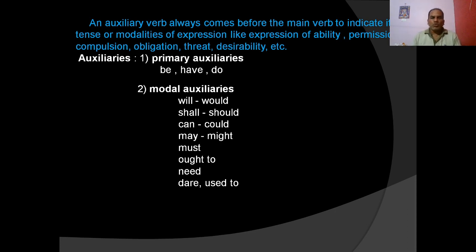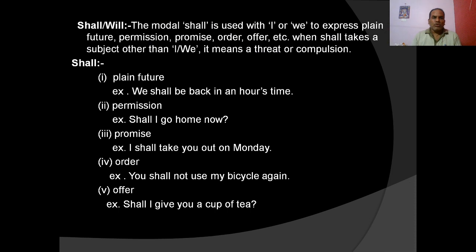Will, would, shall, should, can, could, may, might — these are pair modals. Then must, need, dare, used to, and ought to — so 13 modals in total. Let us discuss them one by one.